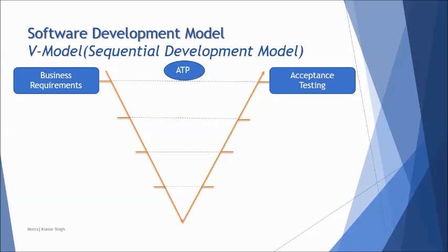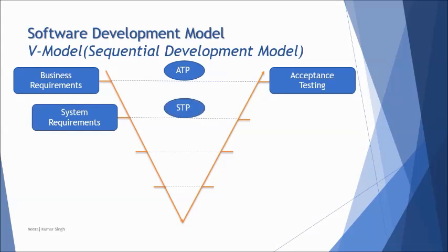If a defect is found during acceptance testing and we realize it was due to incomplete information, omissions, or ambiguities in the business requirement that were not checked early, a sequential model requires a lot of effort to fix such defects. So we invite the acceptance test team early during requirement gathering to help find loopholes and key areas where we may lack coverage, helping acceptance testing to pass.